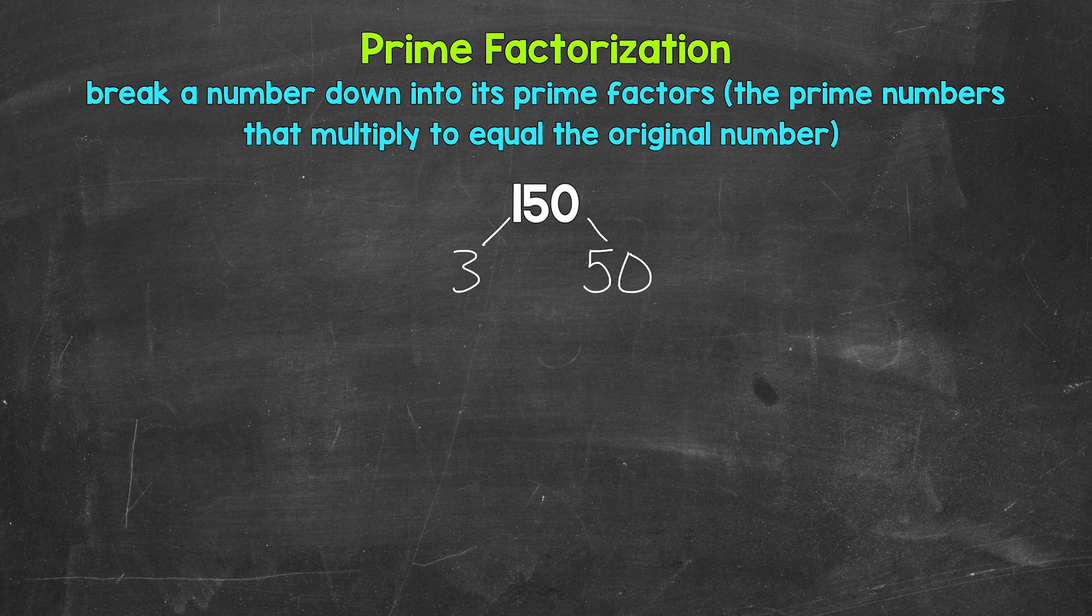Now keep in mind, there are other factors we could have started with here. For example, two and 75, and there are other options as well. These will all work. Depending on the number, there can be multiple different factors that we can use, so there can be multiple ways we can do these. But in the end, we will get to the same prime numbers, and that's what's important.